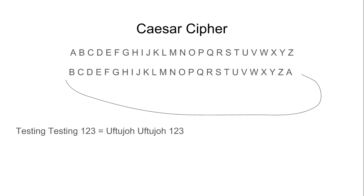Cracking the Caesar cipher is very simple. All you need to do is look for commonly used letters. The most commonly used letters, according to Wikipedia, are E, T, A, O, I, N. You're probably not going to need to use that many. It's especially easy with a big chunk of text in Caesar cipher code, but with a small text it'll work too.